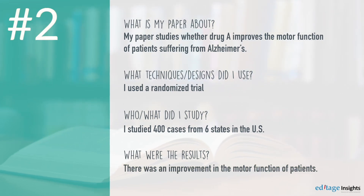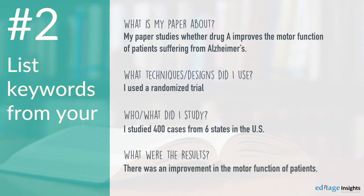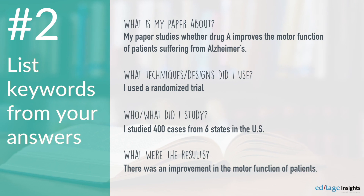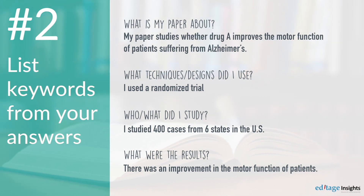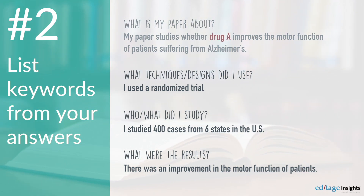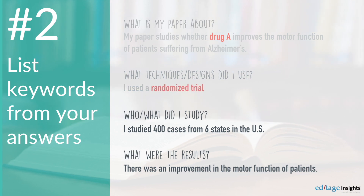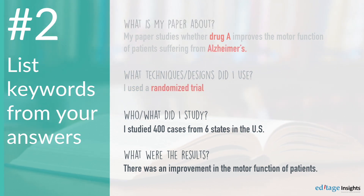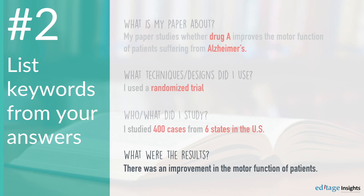Step 2: List keywords from your answers in Step 1. From the previous example, we get some keywords: Drug A, randomized trial, Alzheimer's, six states in the U.S., 400 cases, improvement in the motor function.